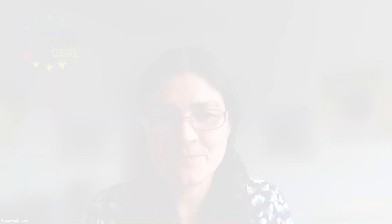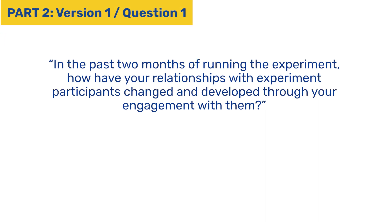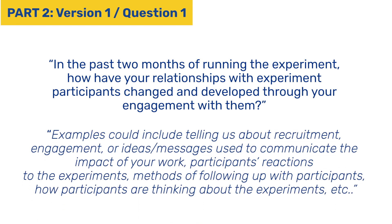As I said at the beginning, there are two versions of part two of the monthly survey: version one and version two. The first question of version one of part two has had a slight update to the wording and it now reads: in the past two months of running the experiment, how have your relationships with experiment participants changed and developed through your engagement with them? We always ask about the last two months, but you are welcome to give us information about any period of the experiment.